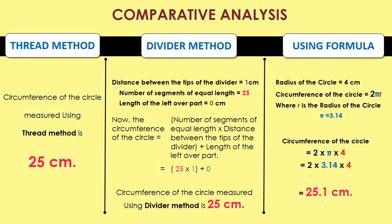As we already measured, the circumference of the circle using thread method is 25 cm. Using divider method, the formula is: circumference = number of segments of equal length × distance between the tips of the divider + length of the leftover part, which is equal to 25 × 1 + 0. So the circumference using divider method is 25 cm. The formula to find the circumference is 2πr. The value of pi is equal to 3.14. So the circumference is equal to 2 × 3.14 × 4, that is equal to 25.1 cm.